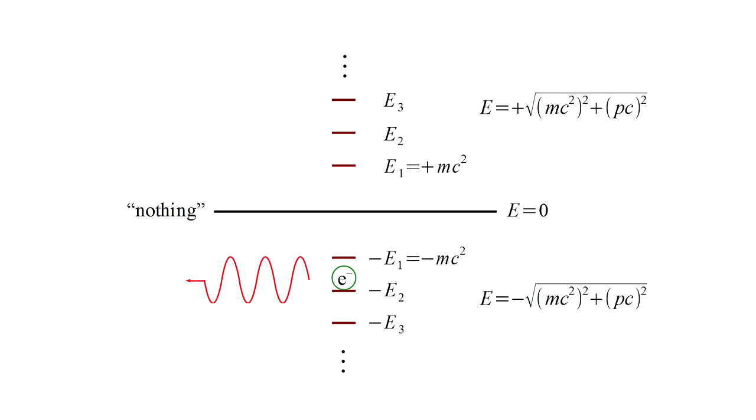So it seems every electron in existence would fall down this negative energy ladder, emitting an infinite amount of radiation in the process. Thankfully this doesn't happen. But it makes the Dirac equation as it stands unviable.